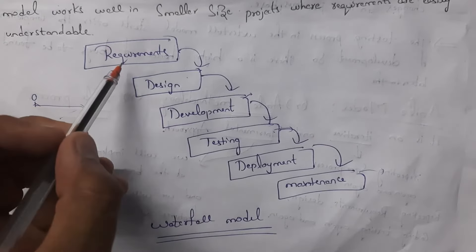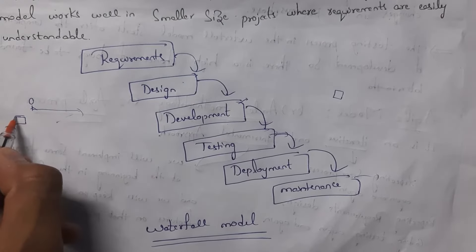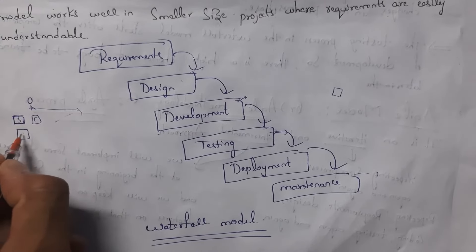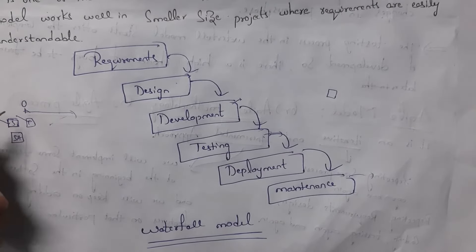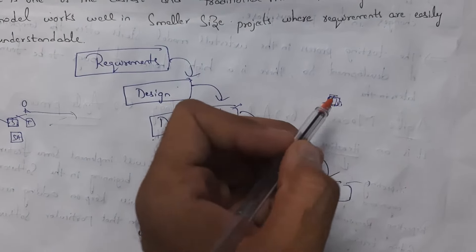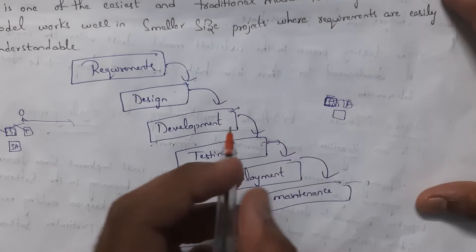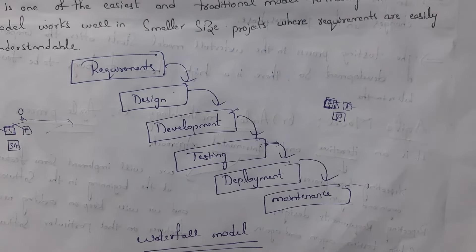In agile model, they create software with very basic features first. For example, they develop student login, faculty login, and student attendance details. When I later say I want to display student results, they can easily add that new feature. This is the major difference between waterfall model and agile model — agile allows continuous addition of new features to existing software.